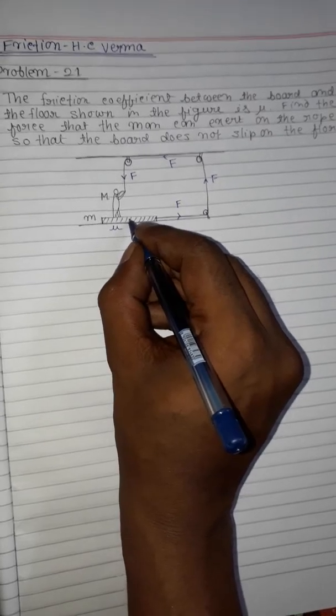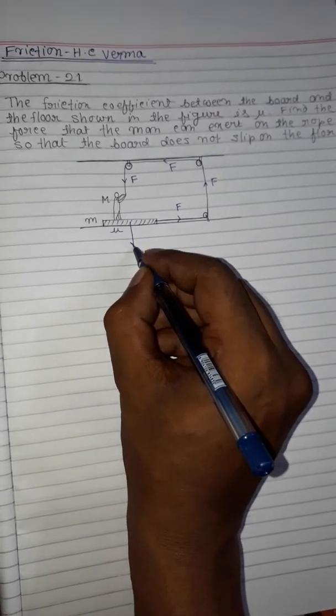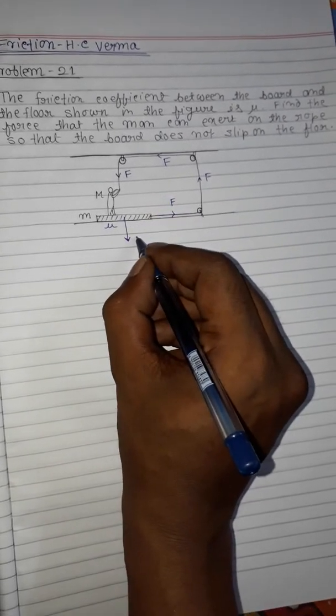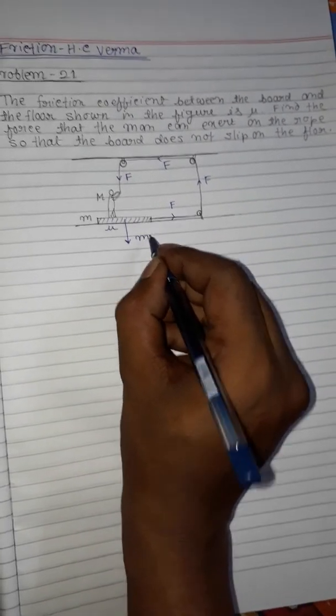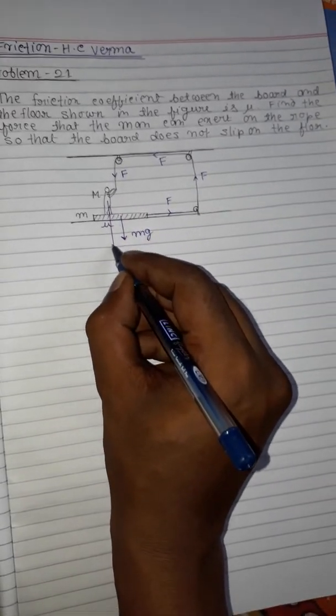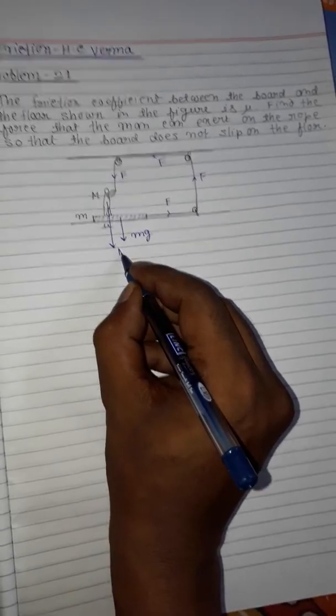Now, the weight of the board is Mg, and the weight of the man is capital M times g.